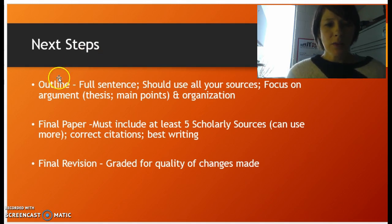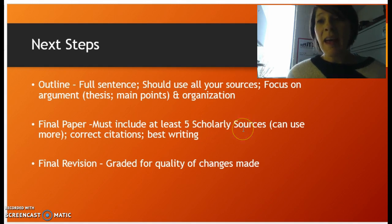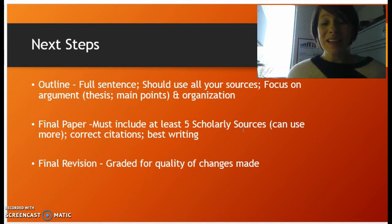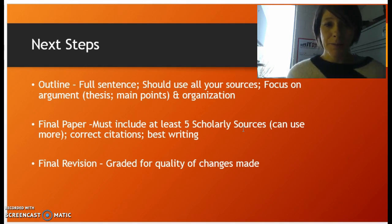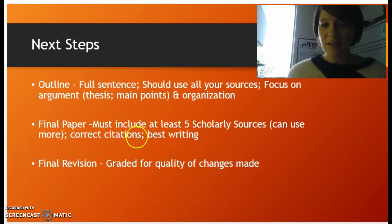After the outline, the final paper is due. You have to have five scholarly sources, but you can use more. You can even use non-scholarly sources — popular press sources or trade magazines that we have found along the way. We've been reading many examples related to fake news, and any of those sources would be fair game to integrate into your final paper. Make sure you have correct citations, and again, it should be an example of your best writing.